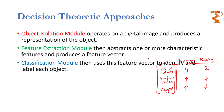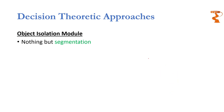The next step is the classification module, which uses this feature vector and classifies the object — whether it is a passenger car or a racing car. This classification is called labeling. The object isolation module is nothing but segmentation. We need to segment out all the objects, figuring out where each particular object is present. Once we have segmented out all the objects, we feed those segmented objects to the feature extraction module, which then extracts all the required features.